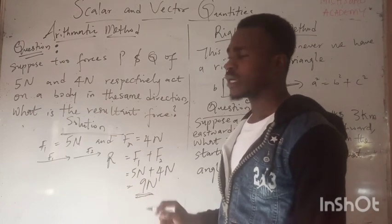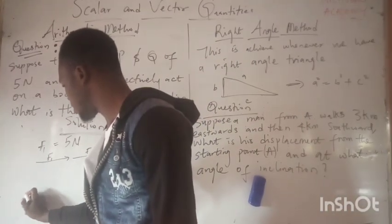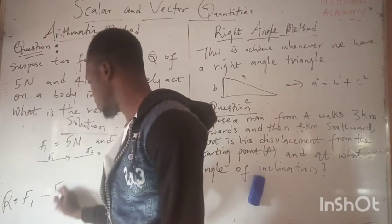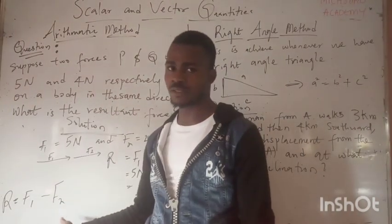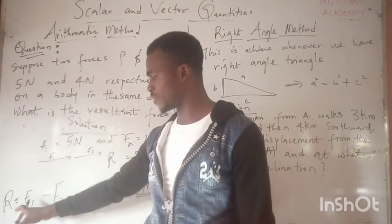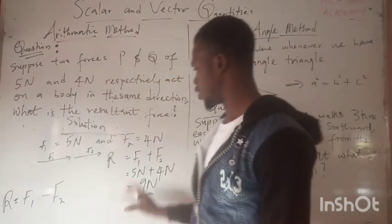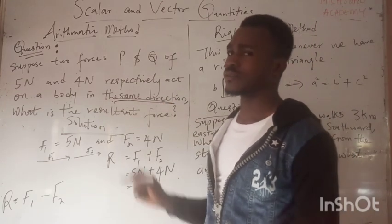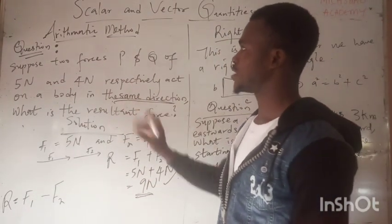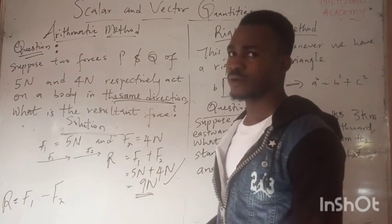If the forces are in different directions — moving in opposite directions — the resultant equals F1 minus F2: 5 minus 4 equals 1 Newton. But since the question states they are moving in the same direction, 9 Newtons is our answer. We consider both direction and magnitude in the arithmetic method.